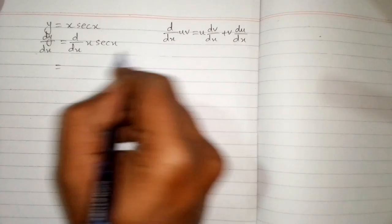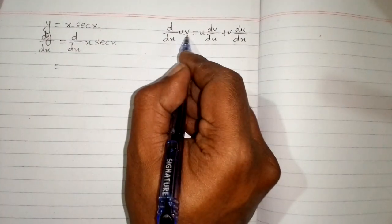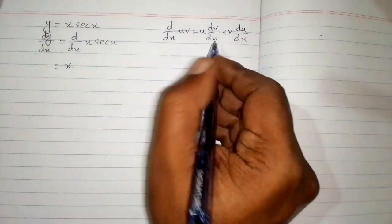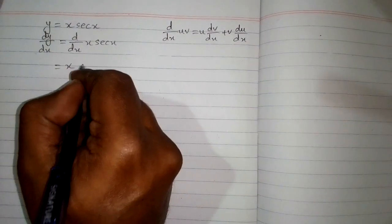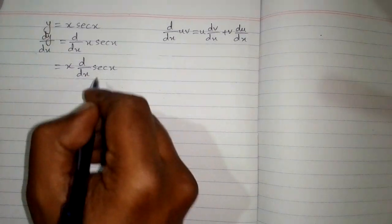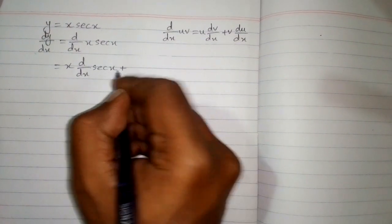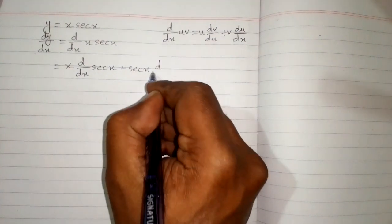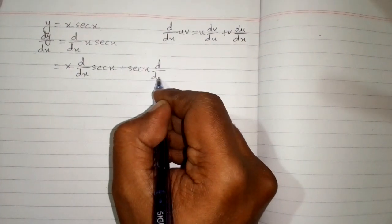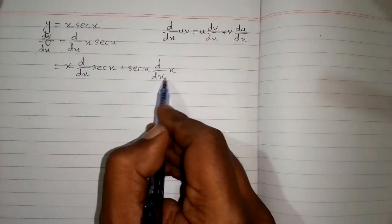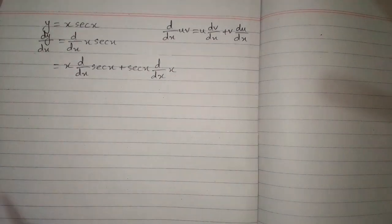Now we have x in place of u and sec x in place of v. So first we will write u, which is x, and then the derivative of v. So we will write d/dx of sec x, then plus v, which is sec x, and the derivative of u, which is x. So we will write d/dx of x.